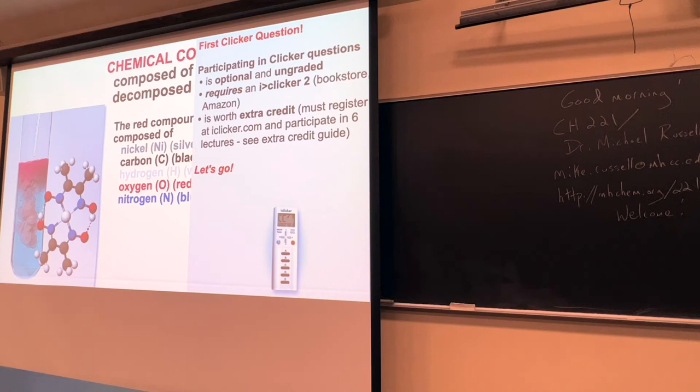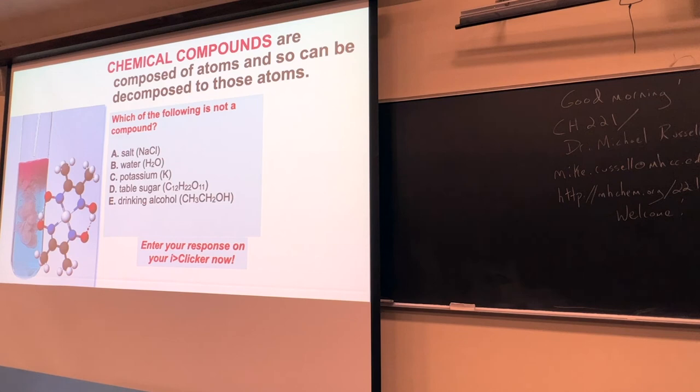Here's our first iClicker question. Which of the following is not a compound? A compound is a mixture of different atoms together. Drinking alcohol is ethanol, C2H6O. Lots of carbons, hydrogens, oxygens, more than one type of element. That's a compound. Sugar has lots of different types of atoms, 12 carbons, 22 hydrogens. That's a compound. Same thing for water, hydrogen and oxygen. Same thing for table salt, sodium chloride. But you can probably see then that good old potassium, that's an element by itself. So that would not be a compound. Potassium is an element. If you're ever unsure, you can go up to the periodic table. There's good old potassium right there.